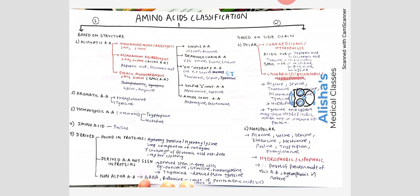Dibasic monocarboxylic amino acids have two amino groups and one carboxylic group, making them basic amino acids. The examples are lysine and arginine. Histidine is also a basic amino acid but is not included here because it is a heterocyclic amino acid. Coming to aromatic amino acids, the examples are phenylalanine and tyrosine.